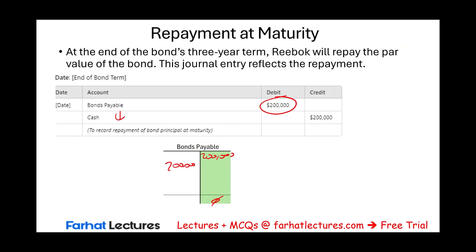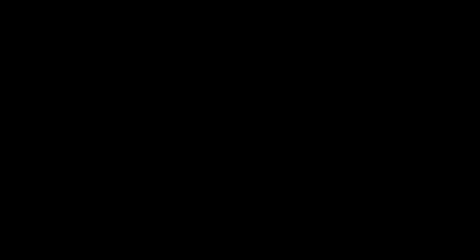What do we need to do next? The next thing we would look at is a bond issued at a premium, and we'll do the same thing: issue the bond, record the original issuance, interest payment, amortizing the premium, looking at the amortization schedule, then paying off the bond. Stay motivated, stay focused. Bonds is important. See you in the next session. Thank you.